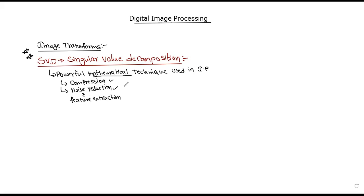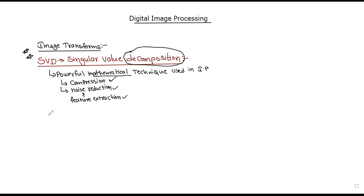So in this: compression, noise reduction, feature extraction — this is singular value decomposition. We have a decomposition; we divide and break. In the original image, we can break it into three sub-matrix systems. This is the singular value decomposition.